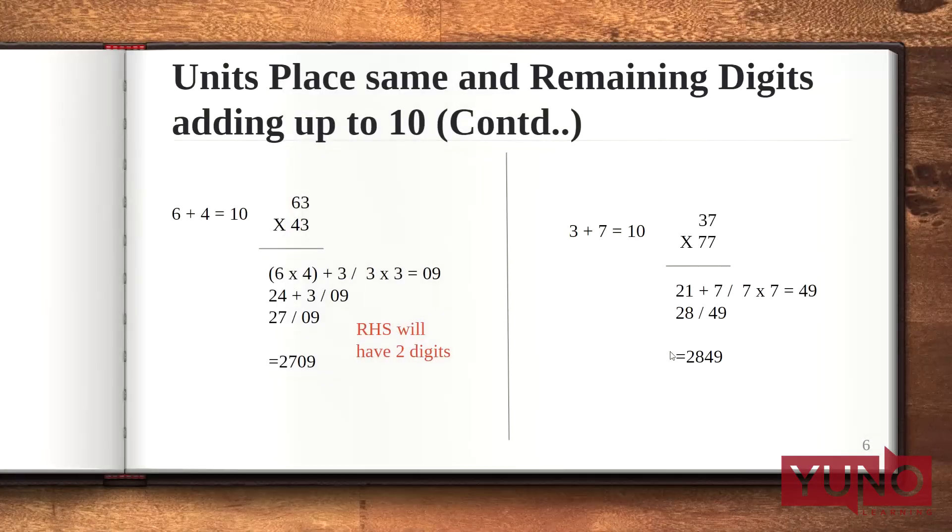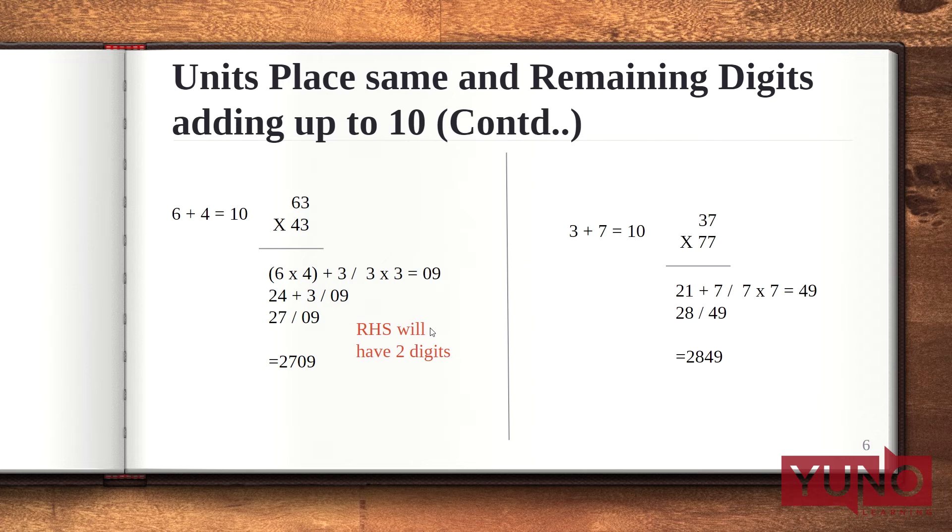Now let's understand this method, this variation with the help of two examples. The first here is 63 multiplied with 43. Now here the rightmost digits are same, that is 3, and the left digits 6 and 4 add up to 10. The first step is multiply the same digits together. That means 3 into 3 gives 09. Now here also keep in mind that your RHS will always have 2 digits.